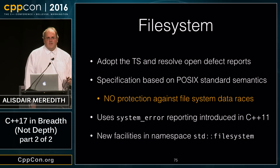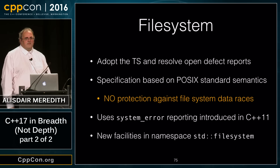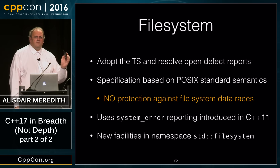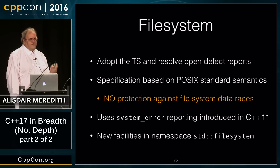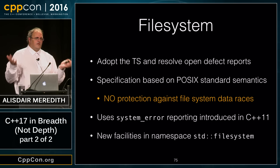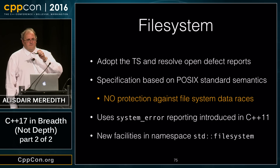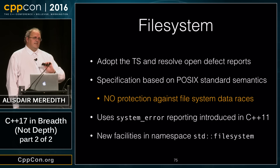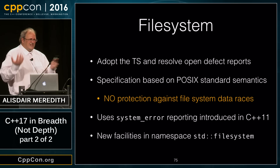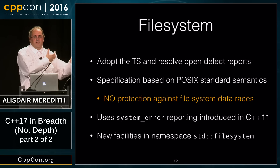The filesystem library is the last large TS being landed into C++17. We're adopting the TS as published around the time of C++14 and resolving defect reports from the intervening three years. The specification is based on the POSIX standard to define the notion of a filesystem and its operations, though you don't need a POSIX filesystem underneath — the underlying filesystem should just have a clean mapping to POSIX semantics.